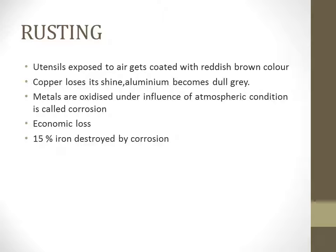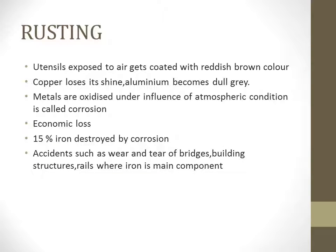Iron and steel are used for various purposes like agricultural tools and in industries, so there is a lot of damage taking place. Damage also occurs because of accidents caused by the wear and tear of bridges. Bridges can collapse, and building structures or rails where iron is the main component get rusted and cause accidents. The two conditions necessary for rusting are oxygen and water or air.